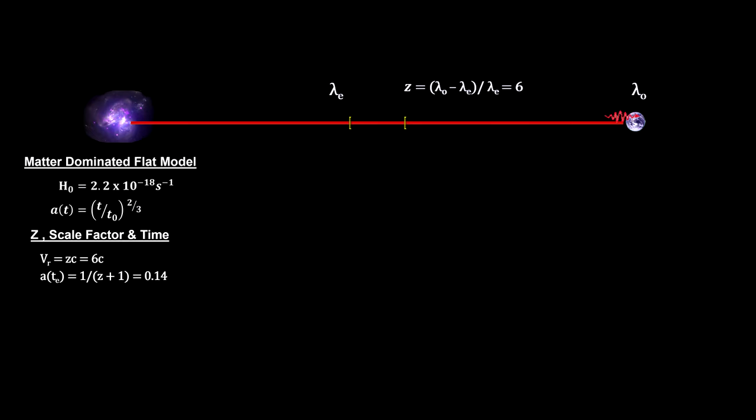Redshift also gives us the actual cosmic scale factor at the time the light was emitted. It gives us the age of the universe at the time the light was emitted, and it gives us the amount of time the light was traveling.